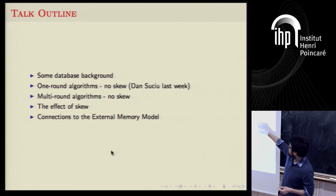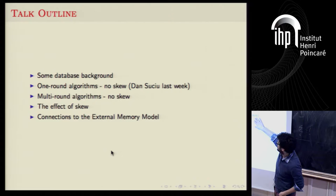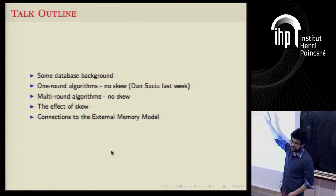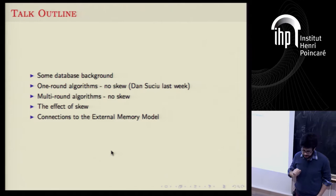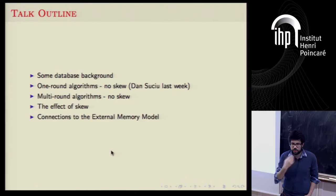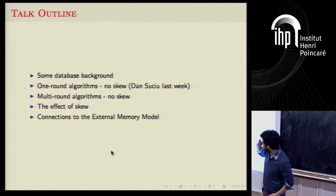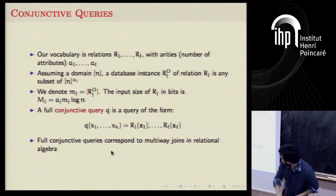I'm going to give some database background, then talk about algorithms for one round with no skew and just describe the result — if you want the proof, you should have gone to last week's lecture. Then I'll talk about multiple rounds with no skew, then explain skew. And if we have time, I'll explain some very interesting connections to the external memory model.